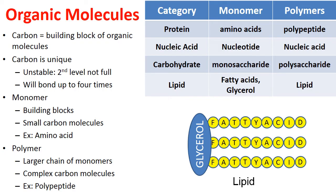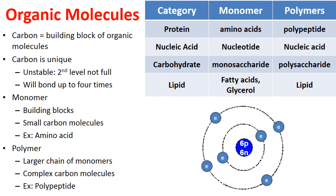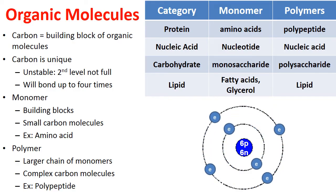I have videos on each of these, but the point is that organic molecules are made from small building blocks called monomers, and those monomers are built up into polymers. What all of these have in common is they're all built around carbon, because they are after all organic.